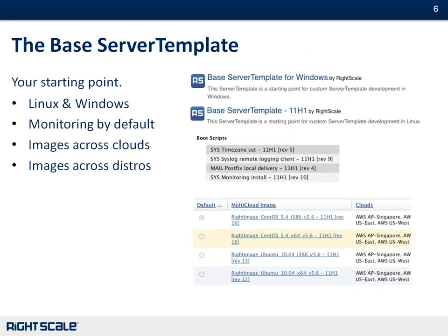I would suggest that most people start with what we call the base server template. The base server template is like if you're programming — you typically start with an SDK for your programming language. It sets up all the libraries for you and gives you a little cursor in the main loop, and then you start programming and hit compile. That's kind of what the base server template does in the cloud. We provide a shell or container that allows you to put in your scripts, and once you press play, we take care of everything on the actual server. We also include a bunch of default images that already run across Amazon regions and other clouds like Rackspace, so you don't have to deal with the image.